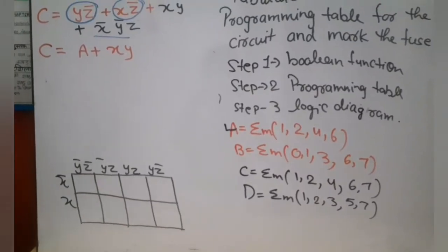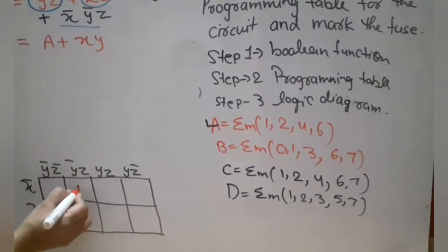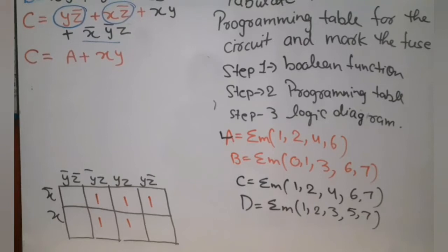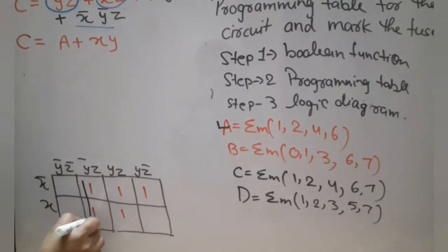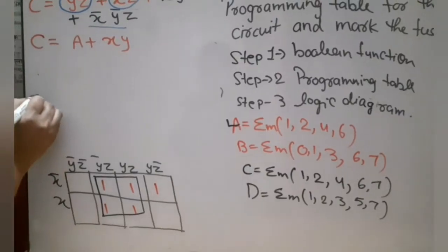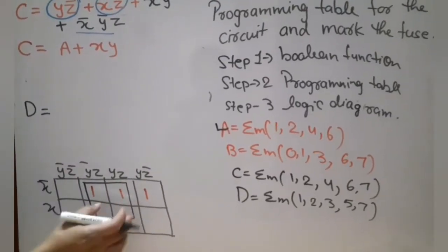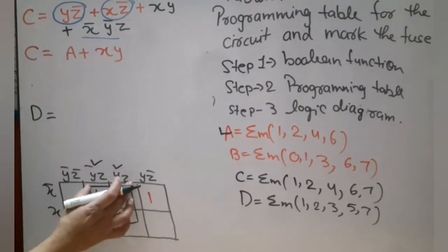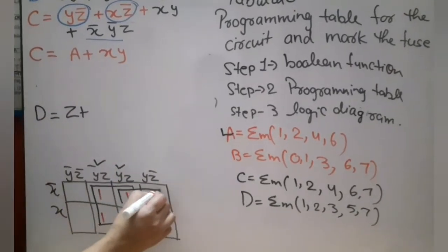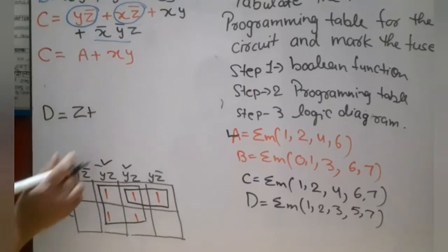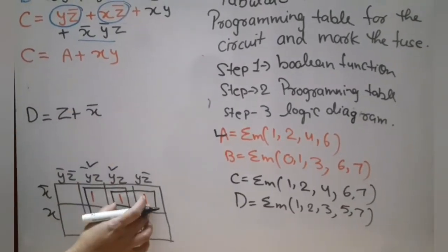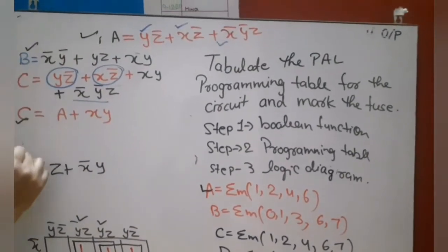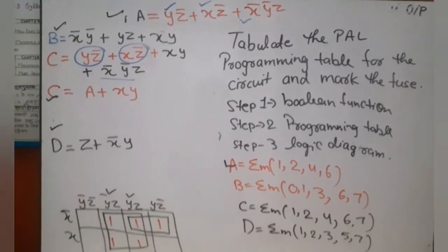For the K-map of D, the minterms are 1, 2, 3, 5, and 7. One quad is possible, giving z, and one pair gives x̄y. So D = z + x̄y. These are the four simplified Boolean equations: A = yz̄ + xz̄ + x̄ȳz, B = x̄ȳ + yz + xy, C = A + xy, and D = z + x̄y. Now I will draw the programming table.